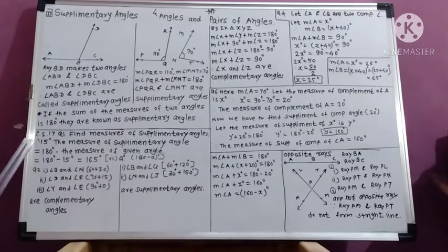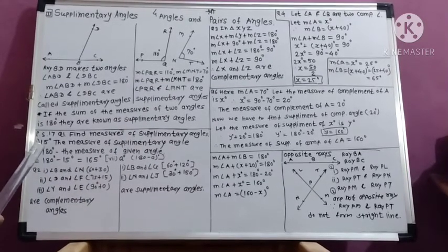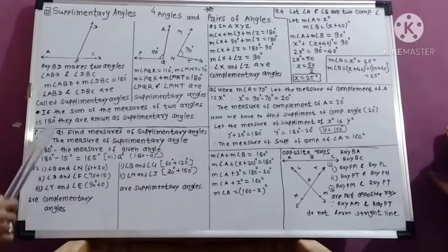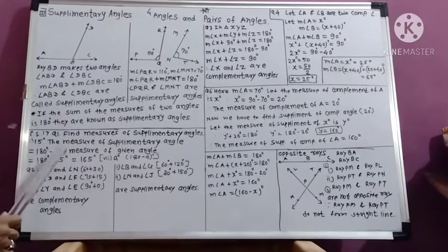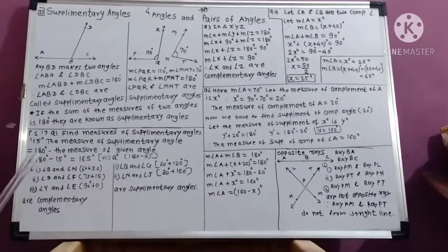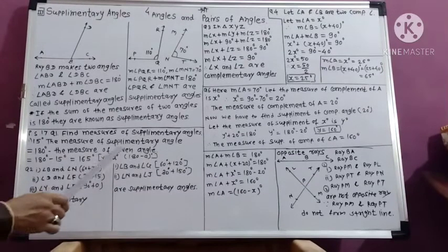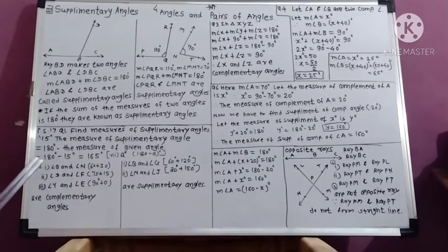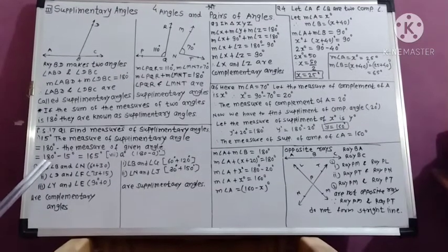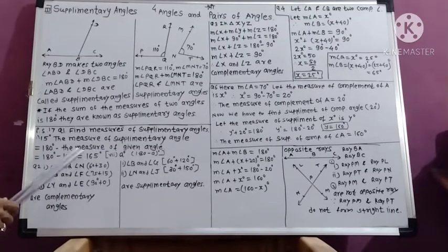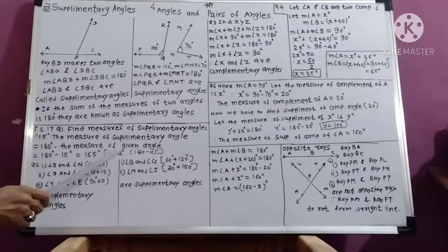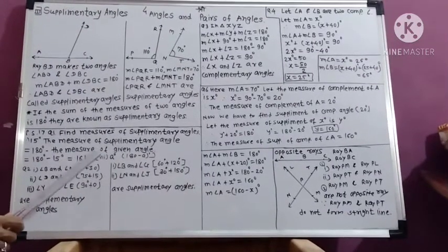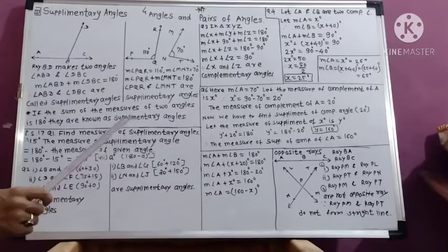In the first example, the measure of the given angle is 15 degrees. The formula is: the measure of the supplementary angle equals 180 degrees minus the measure of the given angle. Putting in the value: 180 degrees minus 15 degrees equals 165 degrees. So 165 degrees is the measure of the supplementary angle.